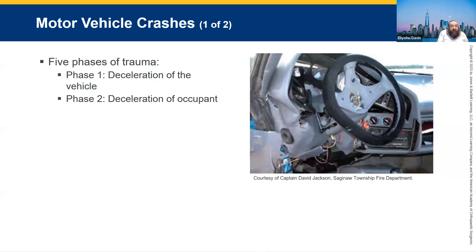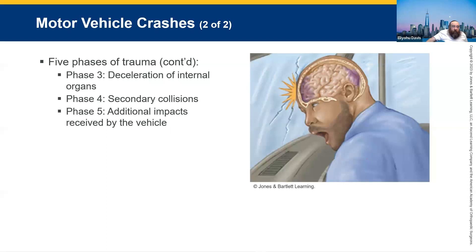Then there's phase two: deceleration of the occupant. As the car brakes, the occupant in the car will also decelerate, but until the car actually stops, the occupant is going to continue moving. We have seatbelts and the occupant's position in the car to consider.